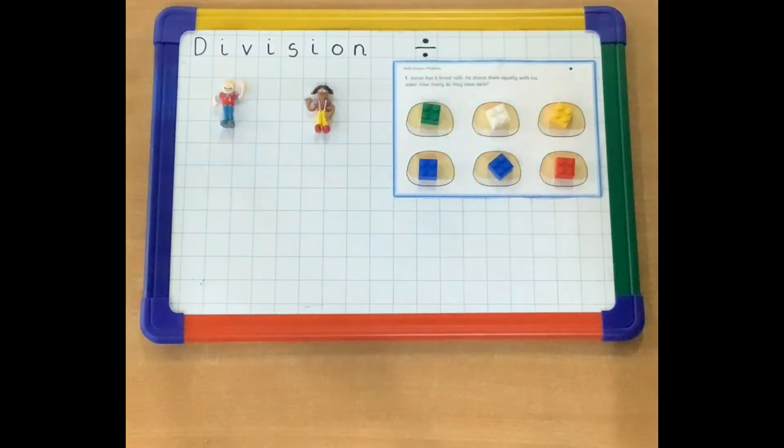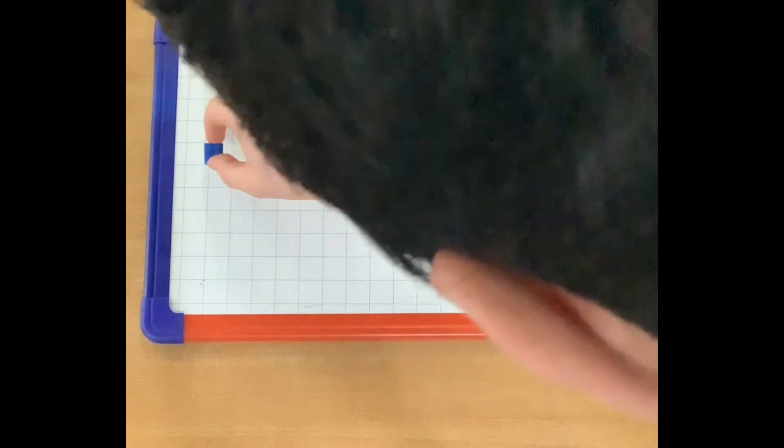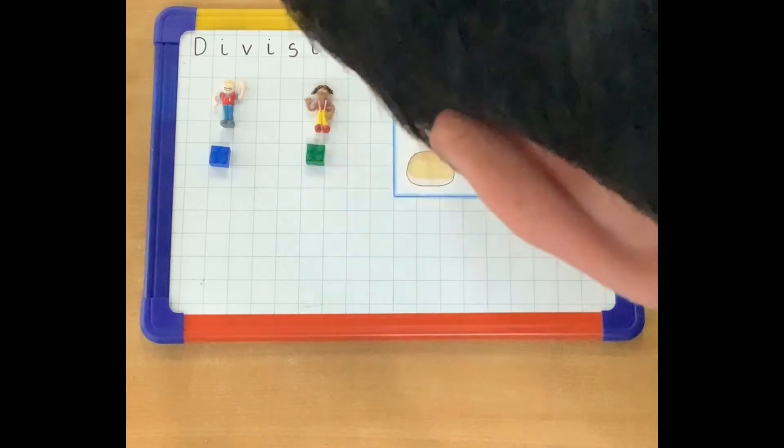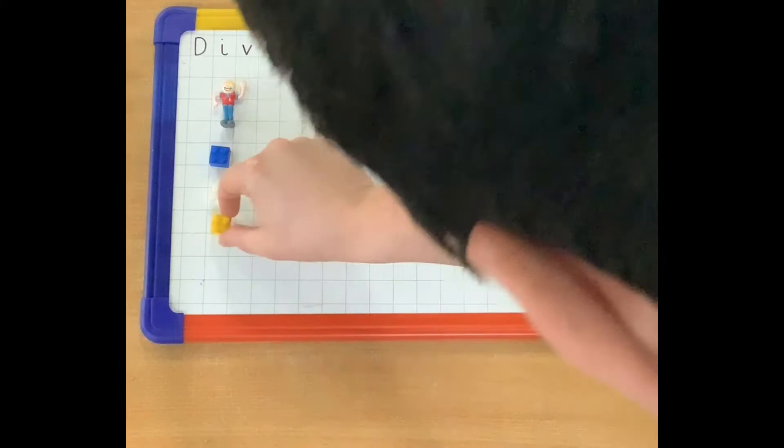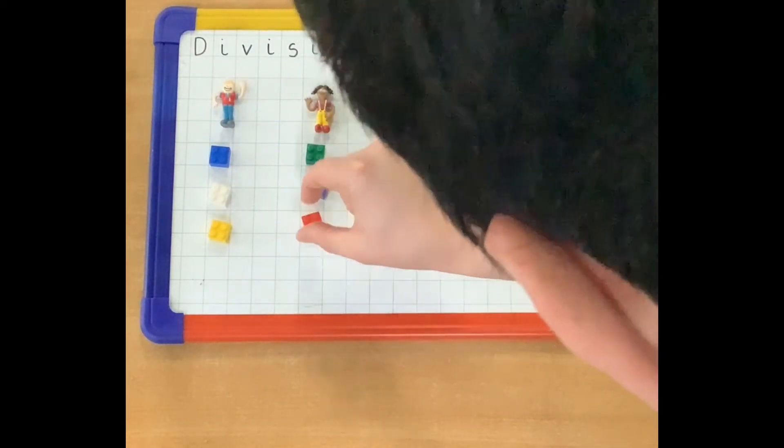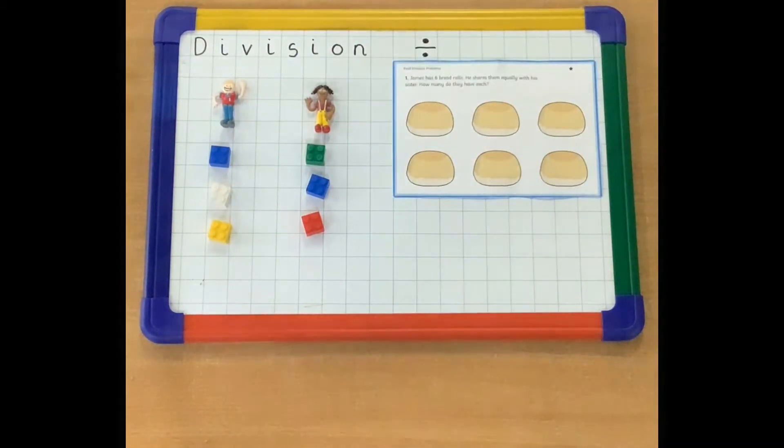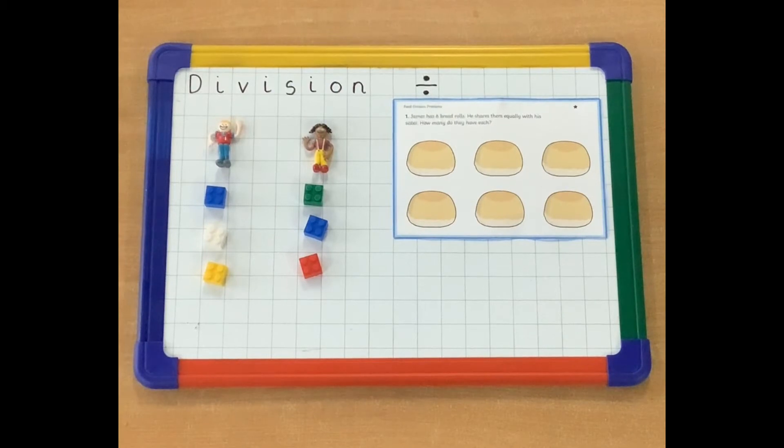So what we're going to do is first, we're going to move our items and share them out. So one for James, one for his sister, one for James, one for his sister, one for James, one for his sister. They have three rolls each now.